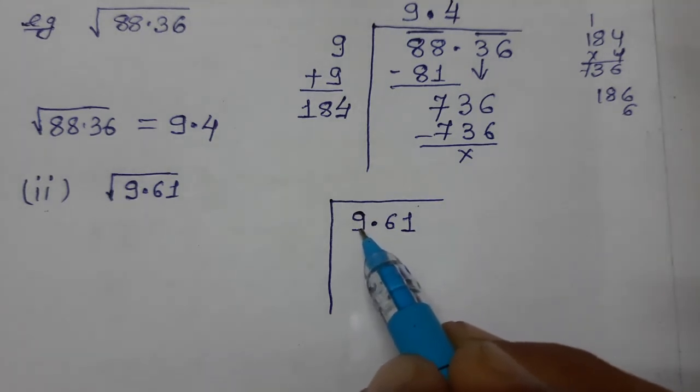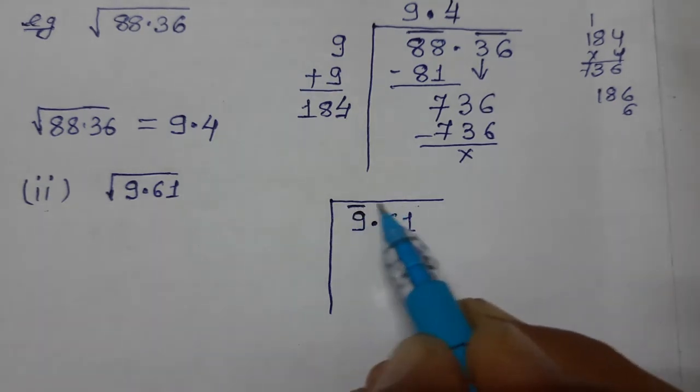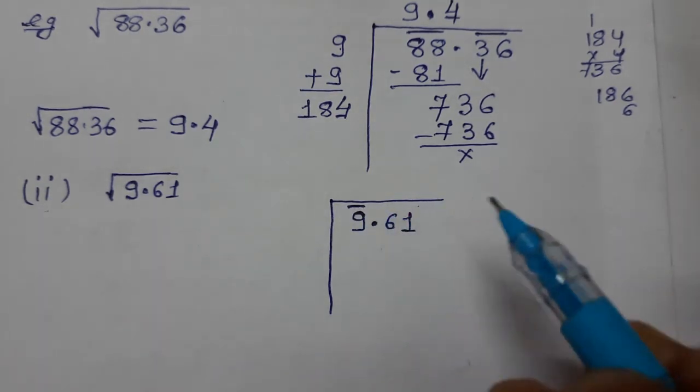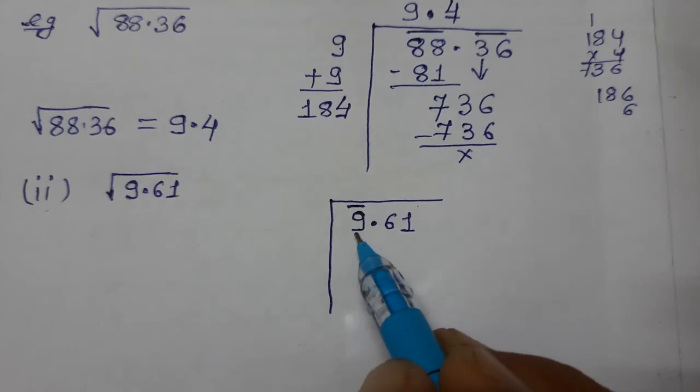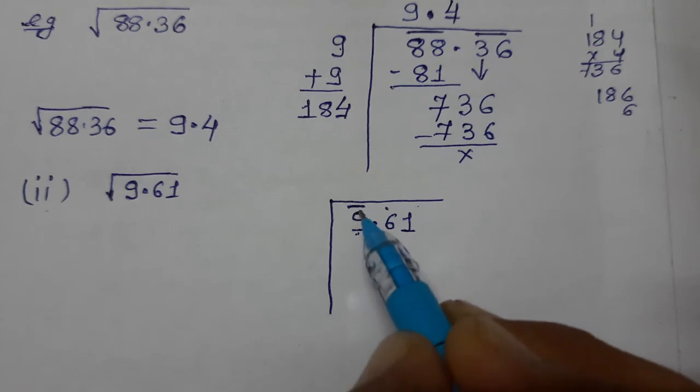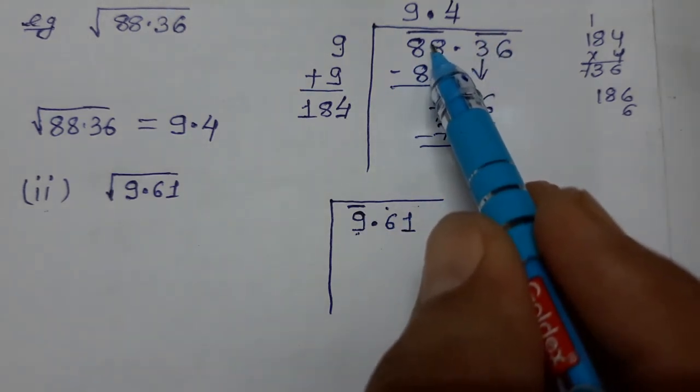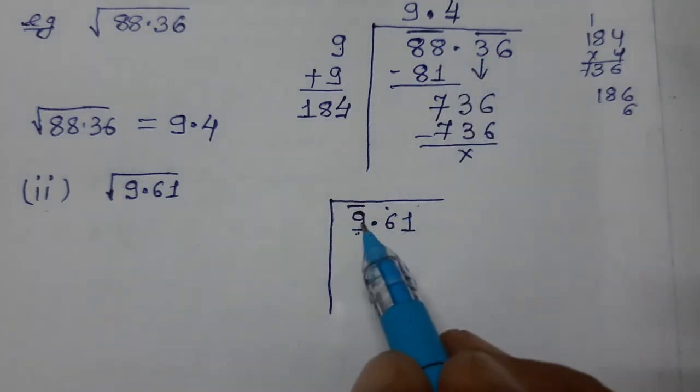Now next step is you have to put bars. The integer part here is 9, so only one. You don't put bars on the complete pair. In this, first you have to put on the integer part, then on the decimal part. So the integer part, only 9, so only 9 gets a bar. Here two digits, so the whole pair gets a bar. You have to make pairs.